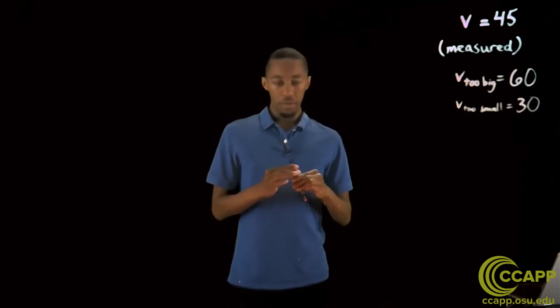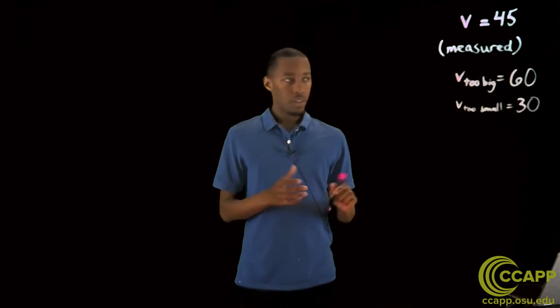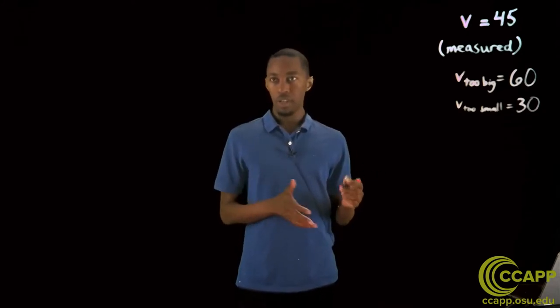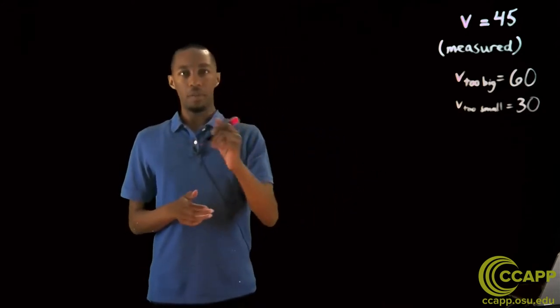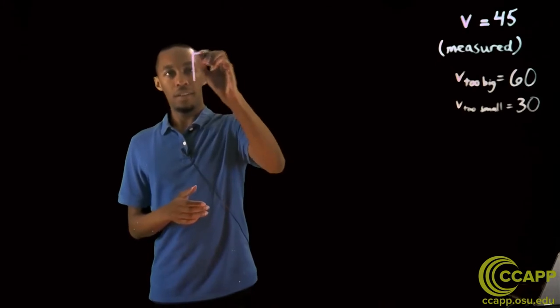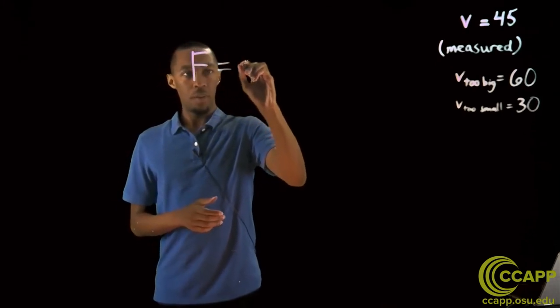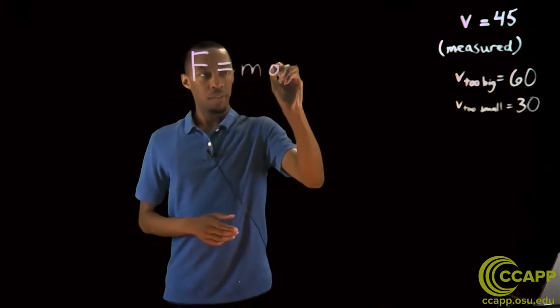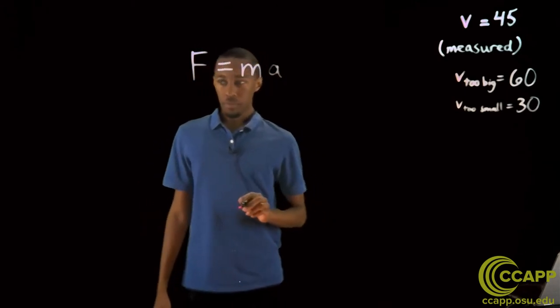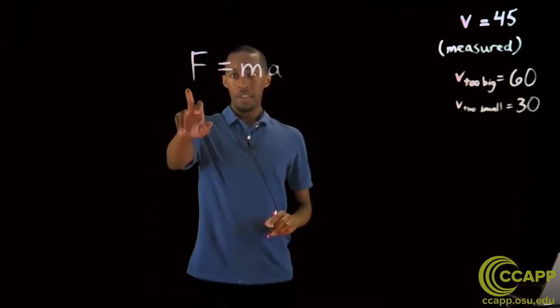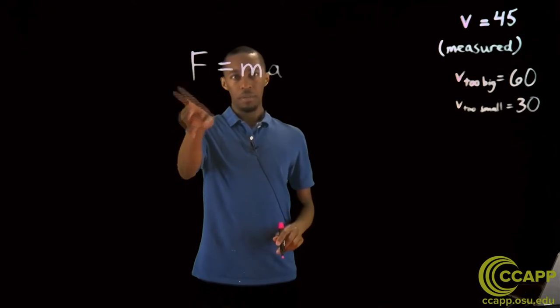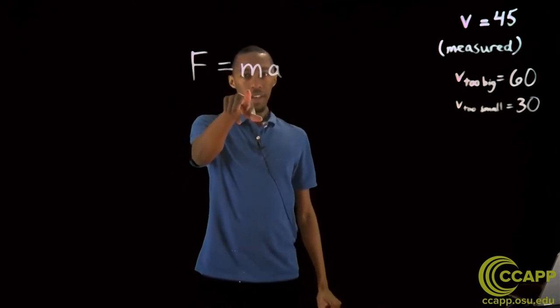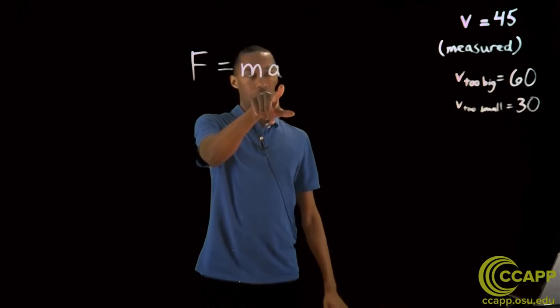Let's try to understand why v of 60 is too big and why v of 30 is too small and why v of 45 is just right. And to do that, we can actually use Newton's equations. So Newton's most famous equation and possibly the most famous physics equation in existence is simply F equals mass times acceleration.